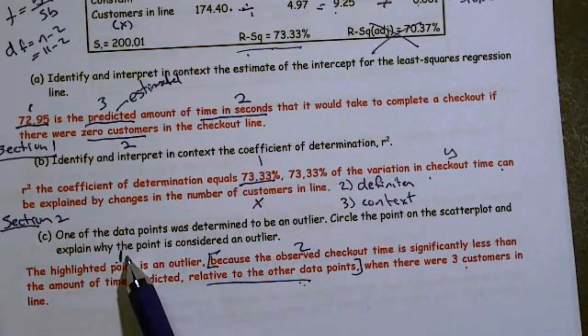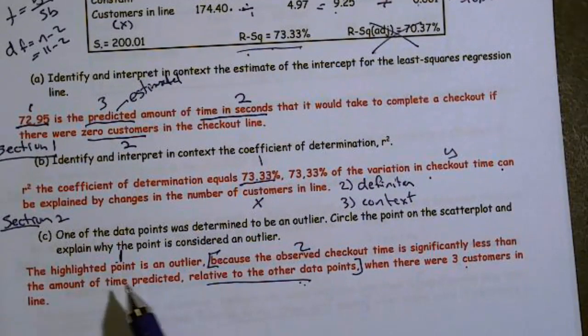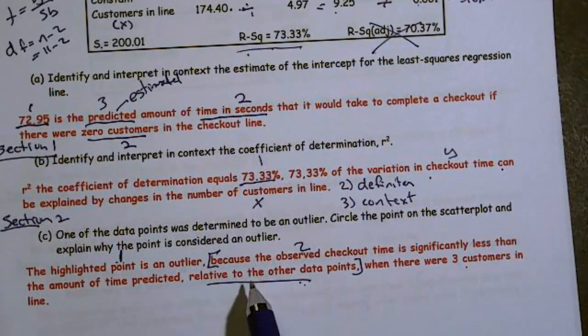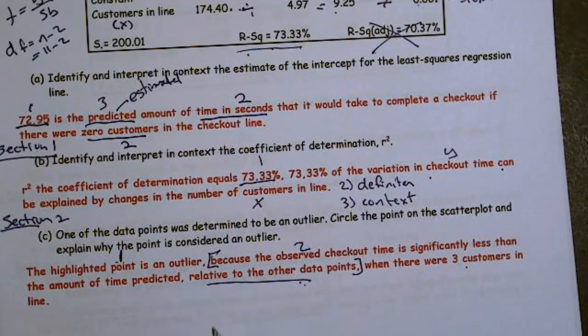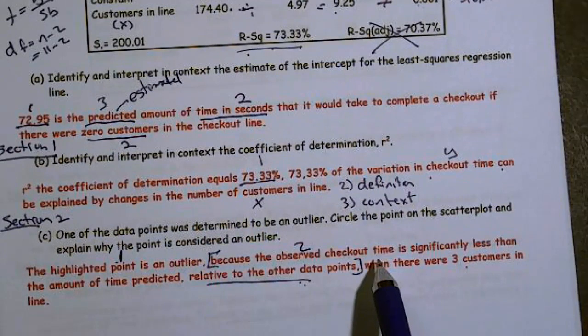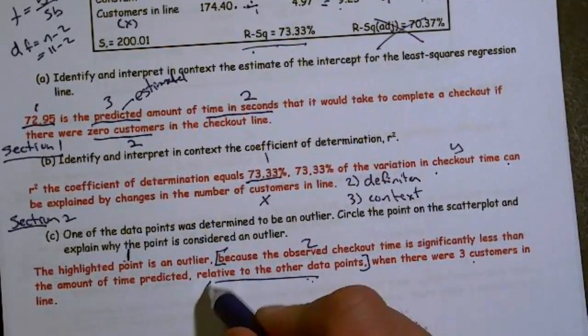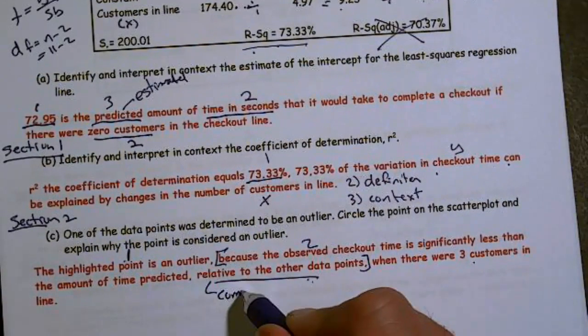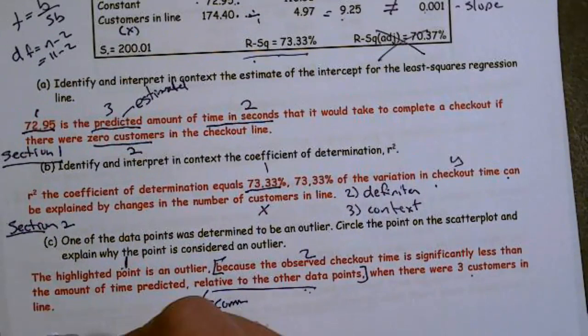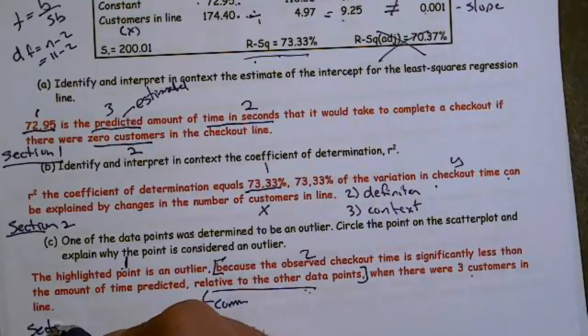If I only identified the correct point, but with a weak response, I got a partial. But to get full credit, I needed to say it was significantly different relative to the other data points or compared to the other data points. So relative or compared. So that would be section three.